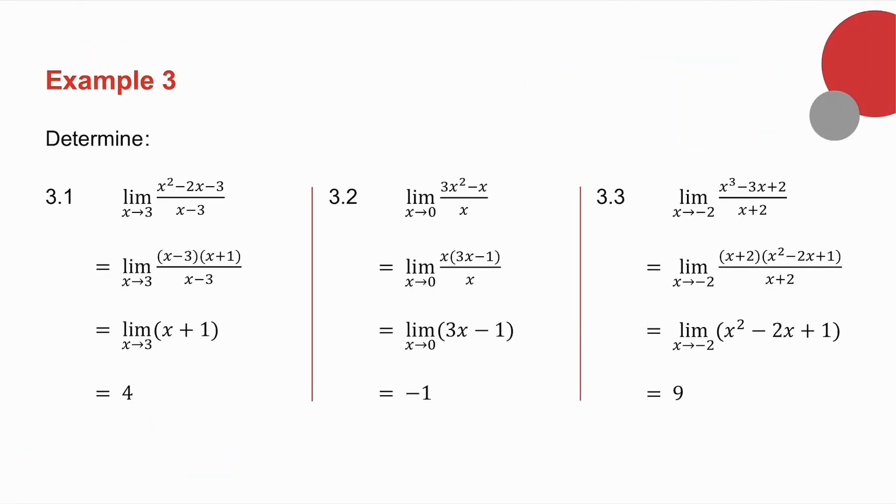In 3.1, I have a trinomial. The x minus 3 cancels. As x gets closer and closer to 3, my answer is 4. 3.2, I take out a common factor. The x cancels. As x gets closer and closer to 0, my answer is minus 1.